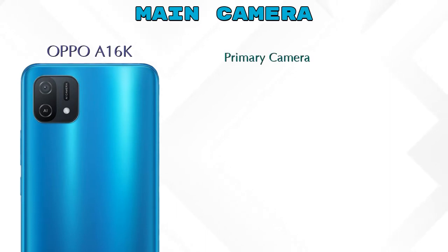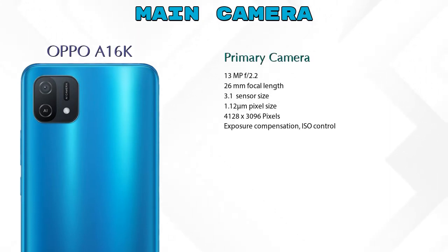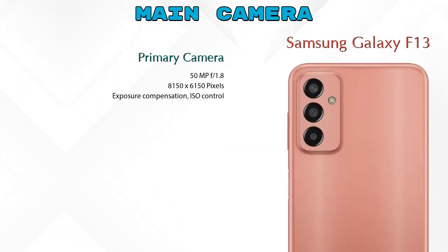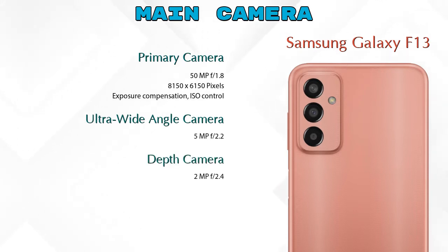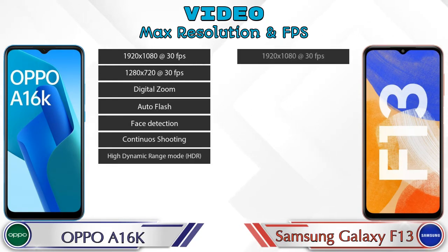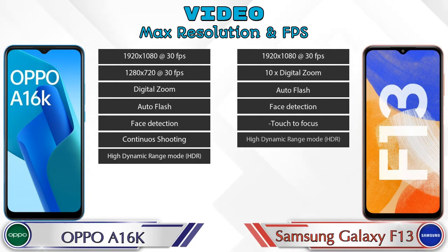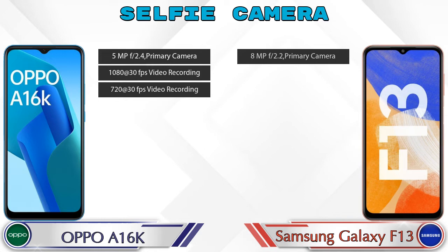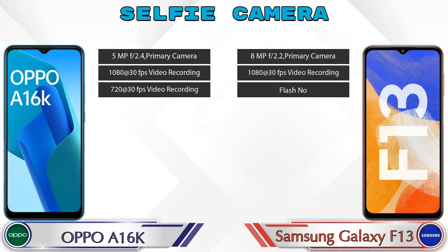Let's talk about the camera. For the rear camera, the A16k has two cameras: a primary camera and an AI lens. The Galaxy F13 has three cameras: a primary camera, an ultra-wide angle camera, and a depth camera. For video, the A16k has 7 and the Galaxy F13 has 6 different feature types available. For the front selfie camera, both phones have a single camera with three different features available.